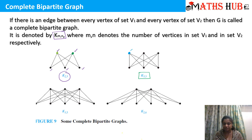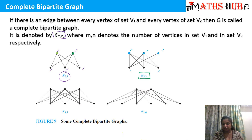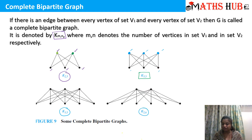Next is K3,3, where there are 3 vertices in set 1 and 3 vertices in set 2. The first vertex is joined to all 3 vertices, the second vertex is joined to all 3 vertices, and the third vertex is also joined to all 3 vertices. Likewise, you can see complete bipartite graphs K3,5 and K2,5.